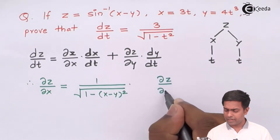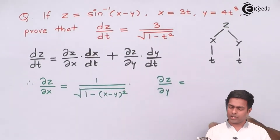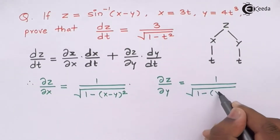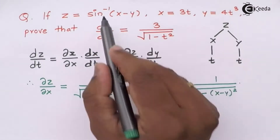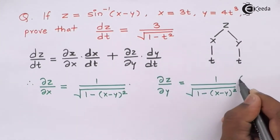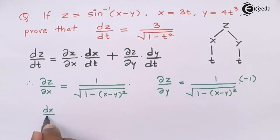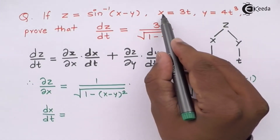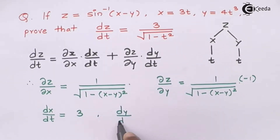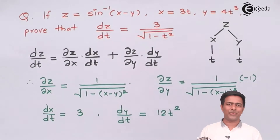Next, we find ∂z/∂y by differentiating z with respect to y partially. We get 1 over √(1 minus (x minus y)²) multiplied by the derivative of (x minus y) with respect to y, which gives 0 minus 1, so ∂z/∂y equals negative 1 over √(1 minus (x minus y)²). Similarly, dx/dt equals 3 and dy/dt equals 12t².